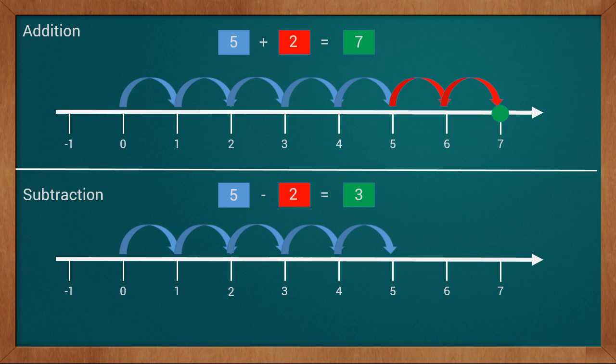Now we have to subtract 2 from 5. As we have to subtract or reduce or minus it, we will move in the left direction. We will move 2 points in the left direction from 5: 1, 2. We reached 3. And this way, 5 minus 2 equals 3.